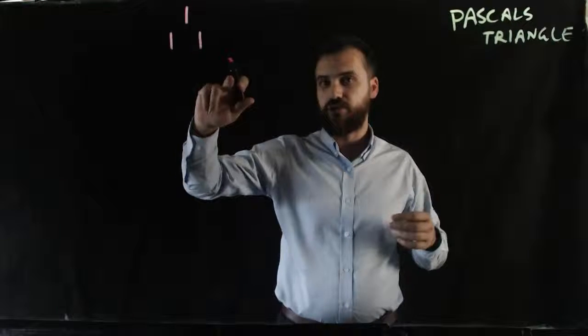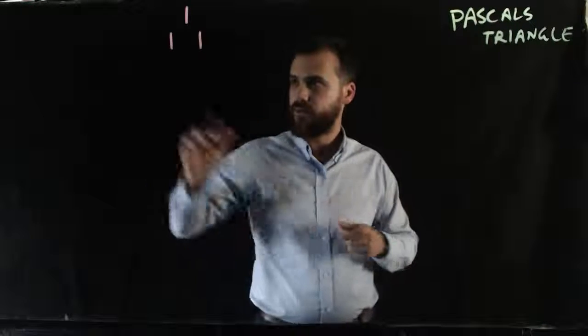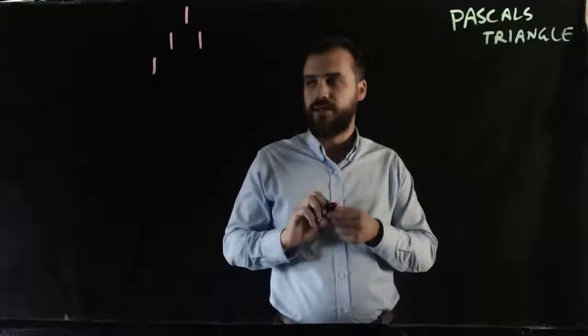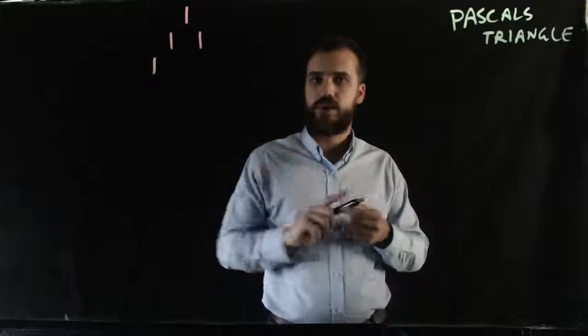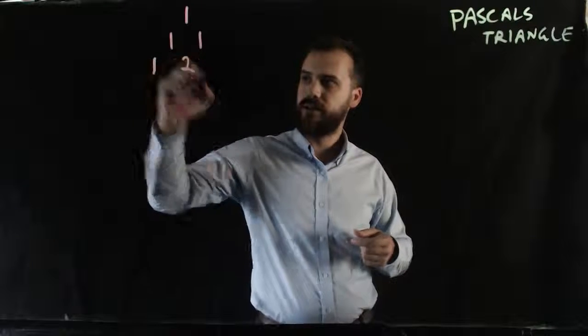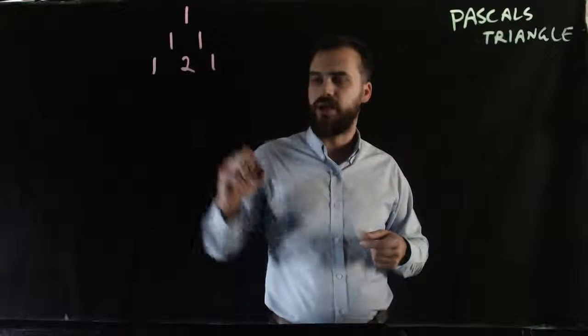Okay, you can see we're forming a triangle here. Now, a 1 goes out on the edge here, and then our next step is to add these top ones, 1 plus 1. Now you guys should be able to figure it out, that's 2. And on the edge here, a 1.